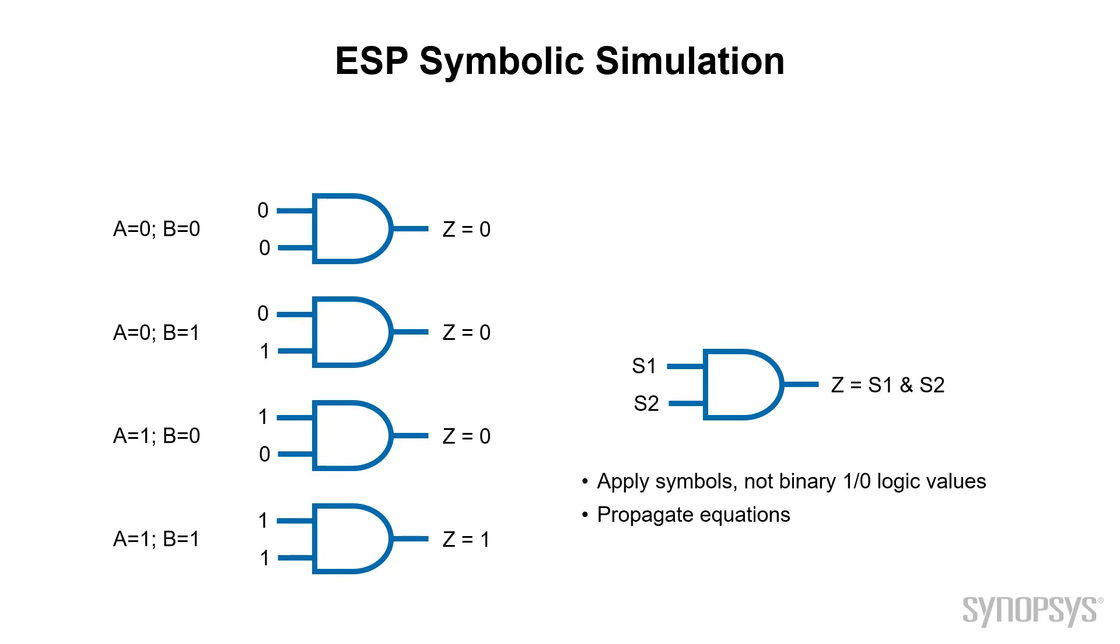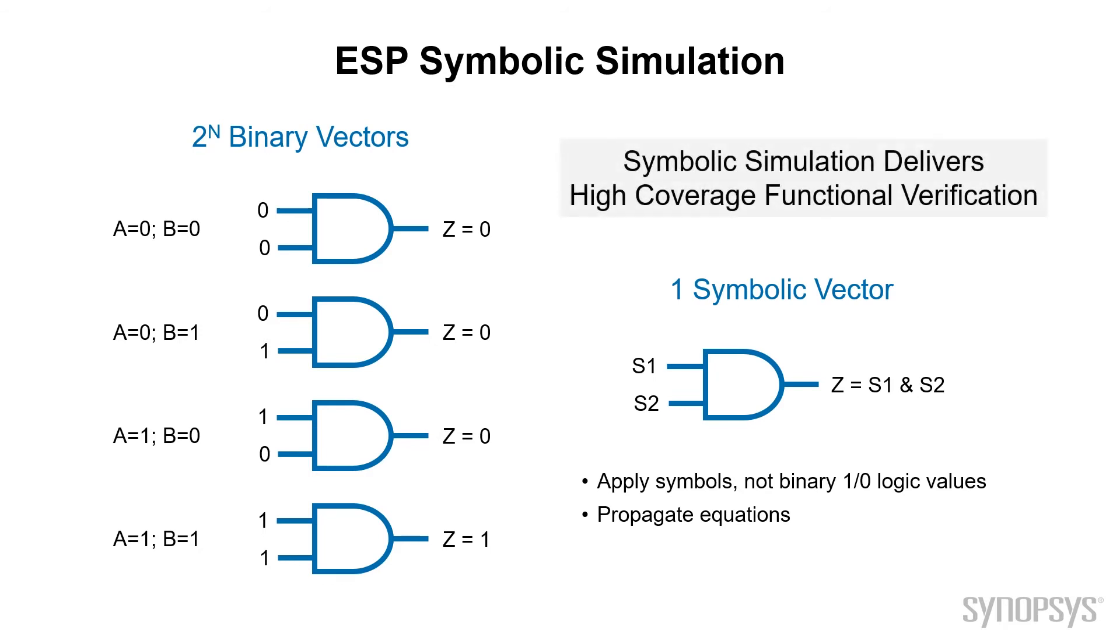Comparing logic and symbolic simulation for combinatorial designs, we see that symbolic simulation needs just one vector, while logic simulation requires two to the number of inputs vectors. In our simple AND gate, that was four logic simulation vectors. For designs with internal state like memory, a flip-flop, or a latch, you will need to explore the entire state space of the design.